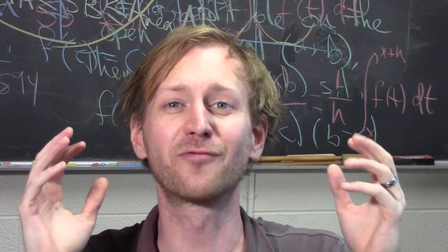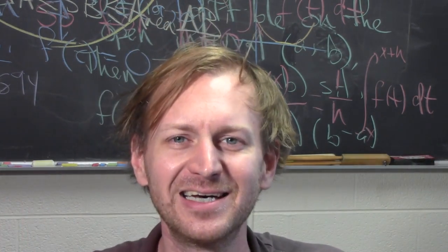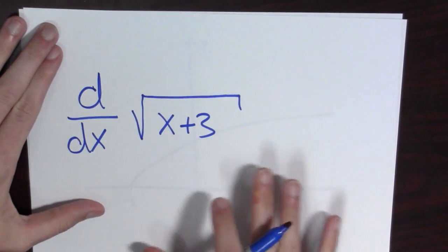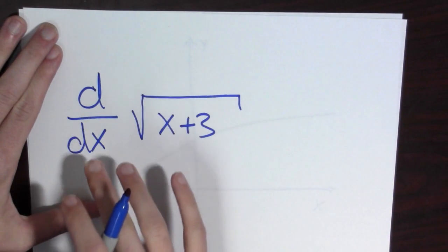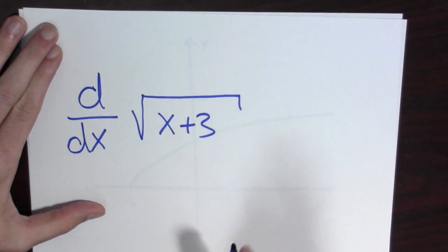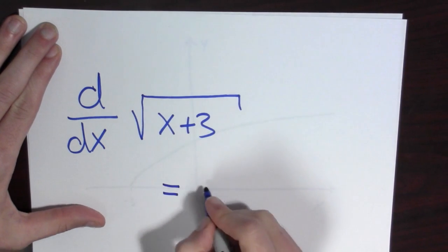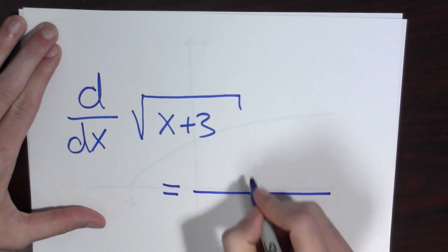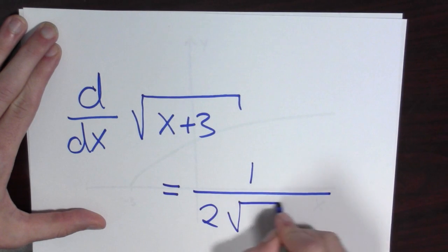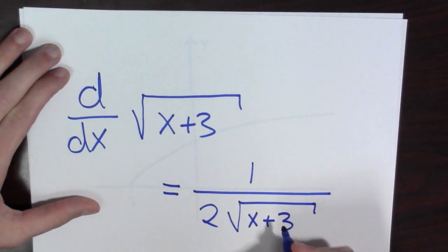We've done a lot of work, but what does this even mean? In this problem, we were computing the derivative with respect to x of the square root of x plus 3, and we found from our work that this is equal to 1 over 2 times the square root of x plus 3.